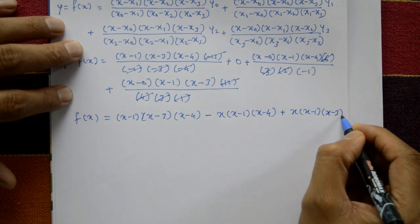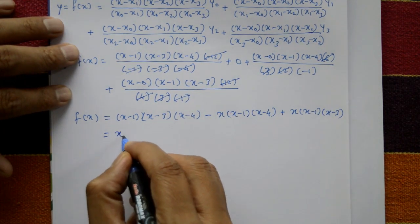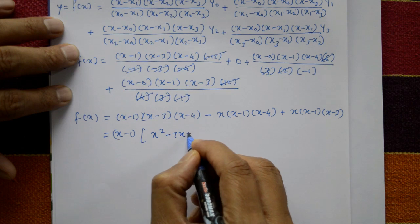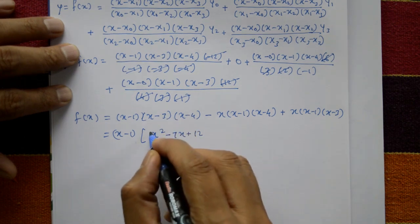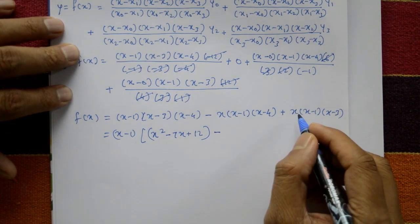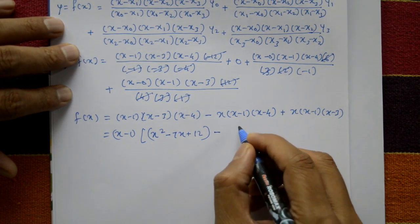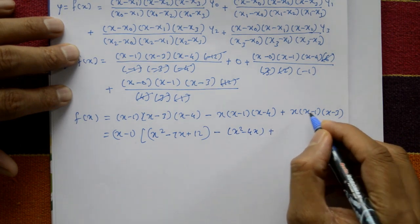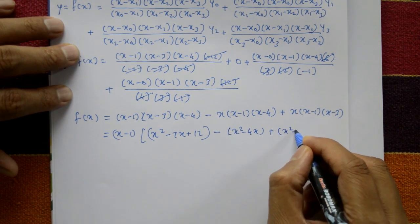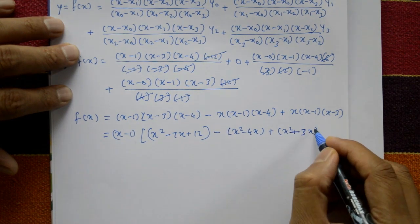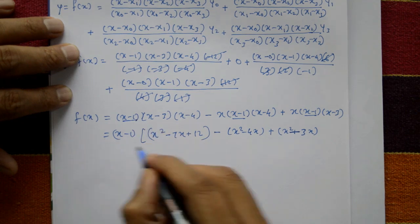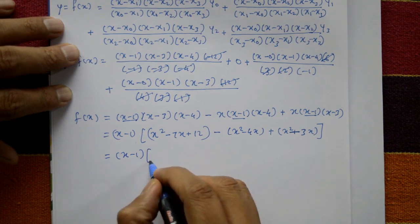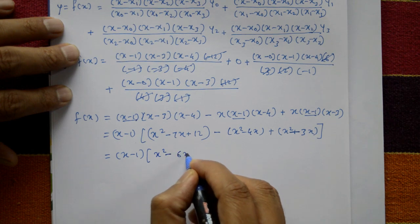Taking (x minus 1) as a common factor outside, inside we have x squared minus 7x plus 12. The remaining term is x squared minus 4x. After multiplication and simplification, taking (x minus 1) outside, inside becomes x squared minus 6x plus 12. Opening the bracket gives f(x) equal to x minus 1 times the simplified expression inside.